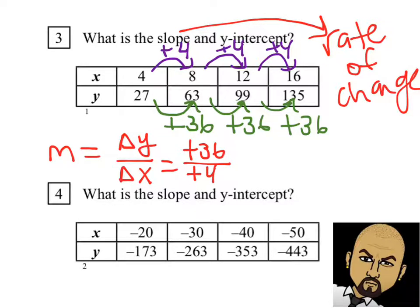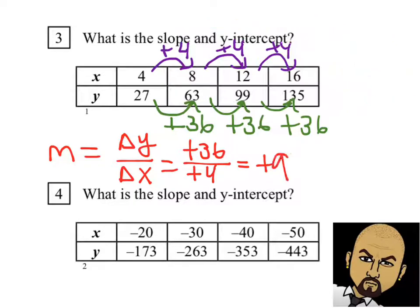So we're going to divide 36 by 4. Positive divided by positive is positive, and 36 divided by 4 is 9. So the slope is 9.